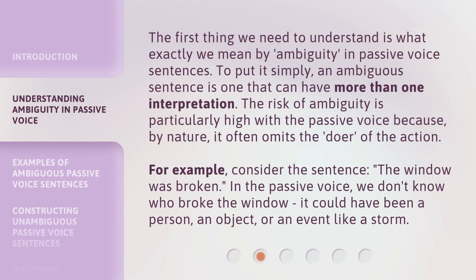The first thing we need to understand is what exactly we mean by ambiguity in passive voice sentences. To put it simply, an ambiguous sentence is one that can have more than one interpretation. The risk of ambiguity is particularly high with the passive voice because, by nature, it often omits the doer of the action. For example, consider the sentence: 'The window was broken.' In the passive voice, we don't know who broke the window — it could have been a person, an object, or an event like a storm.